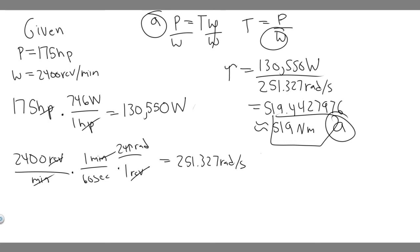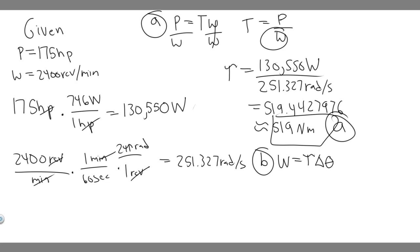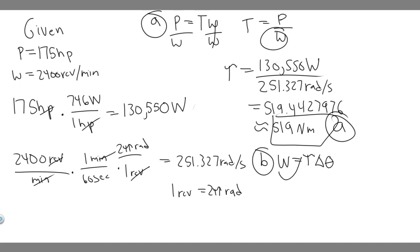Now let's do Part B. We're trying to find how much work the engine does in one revolution of the propeller. For rotational motion, the formula is: work equals torque times the change in angle theta. We're solving for work, we just found the torque, and one revolution equals 2π radians, so the change in angle theta is just 2π radians.